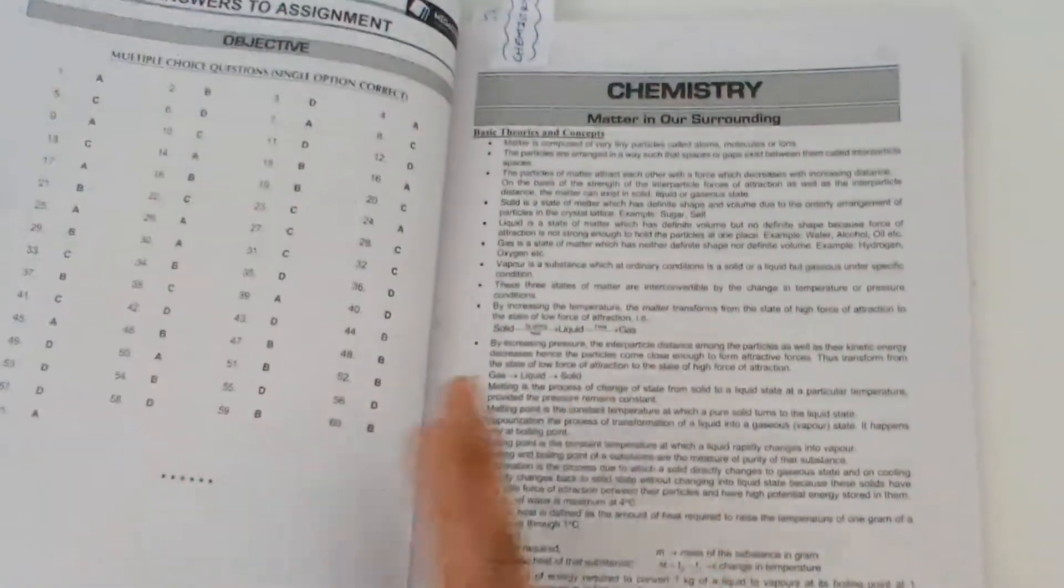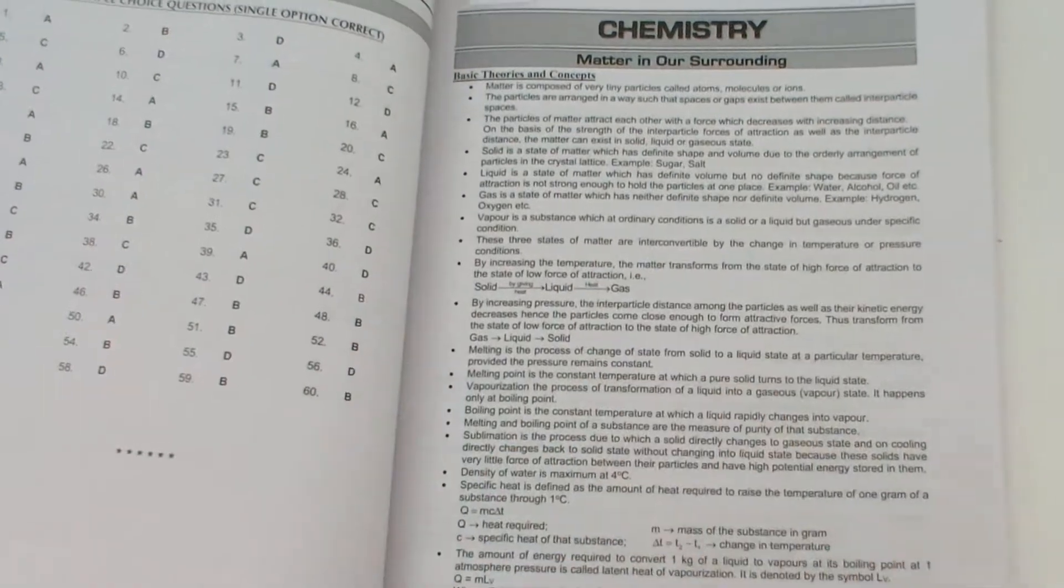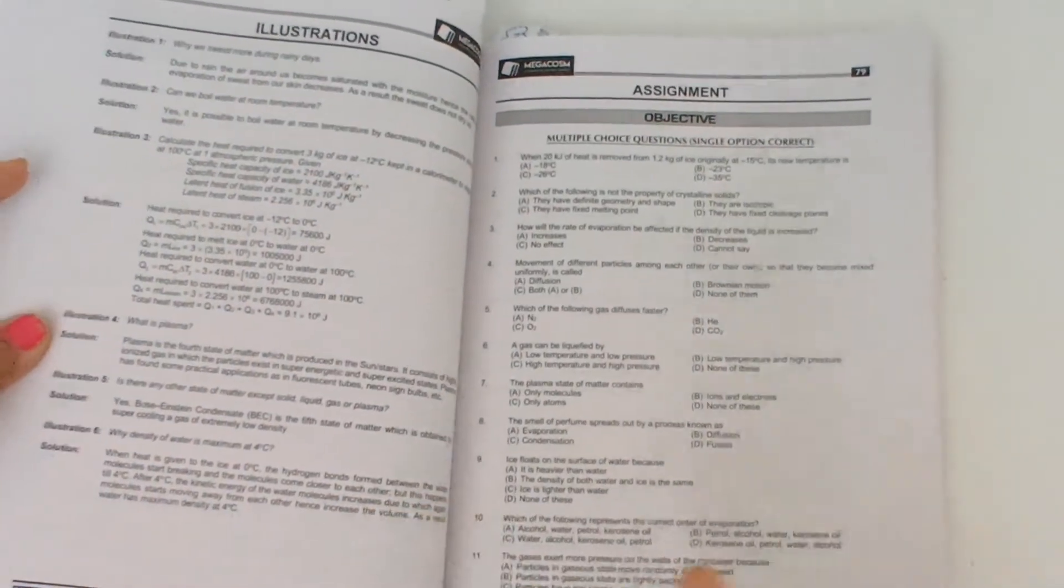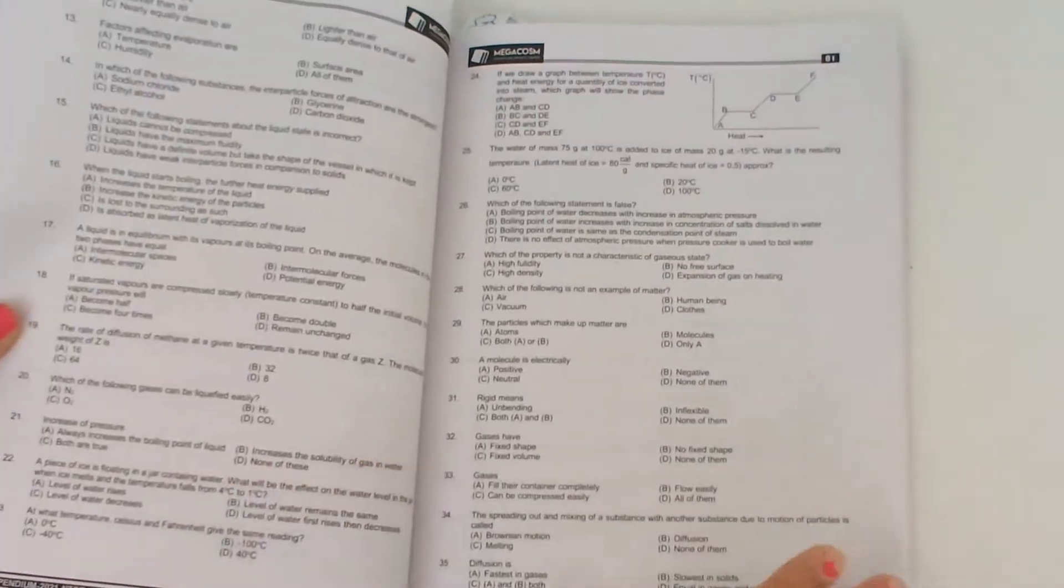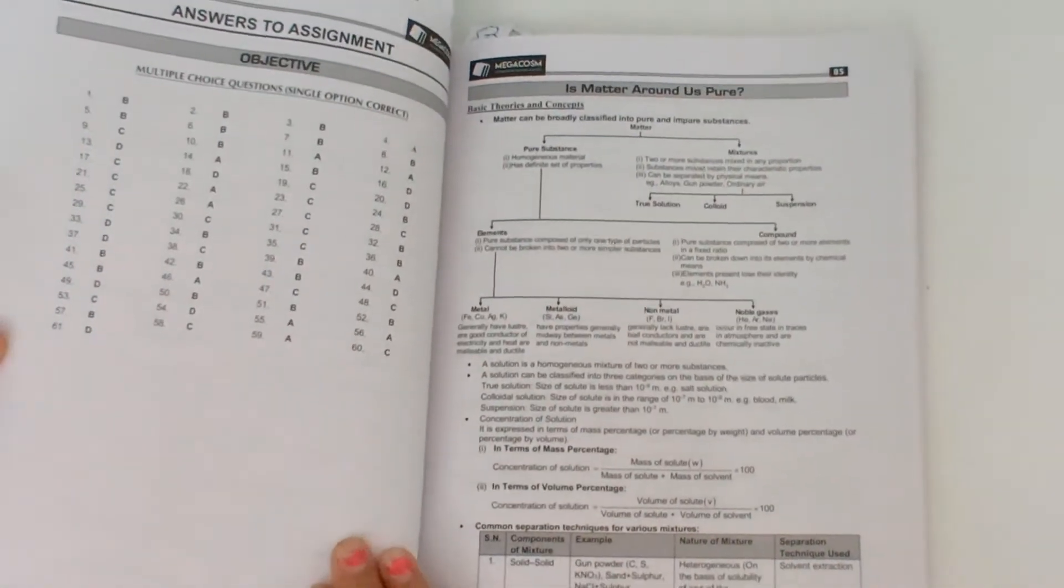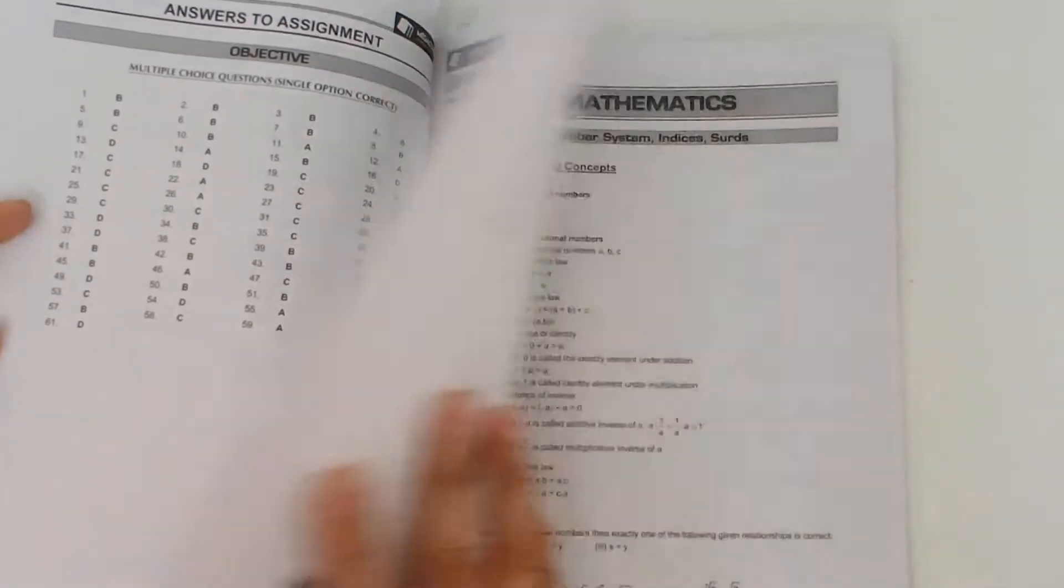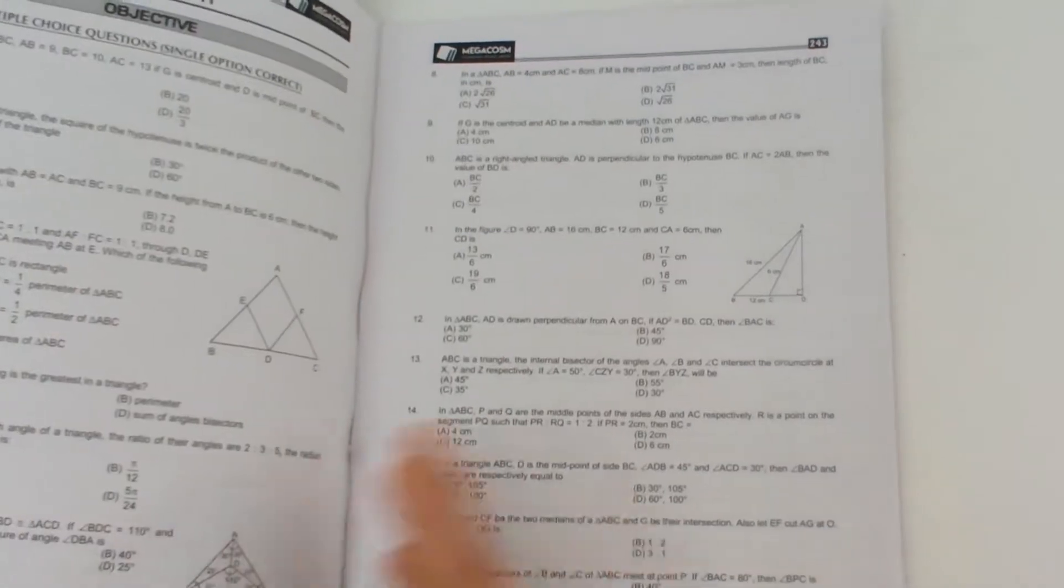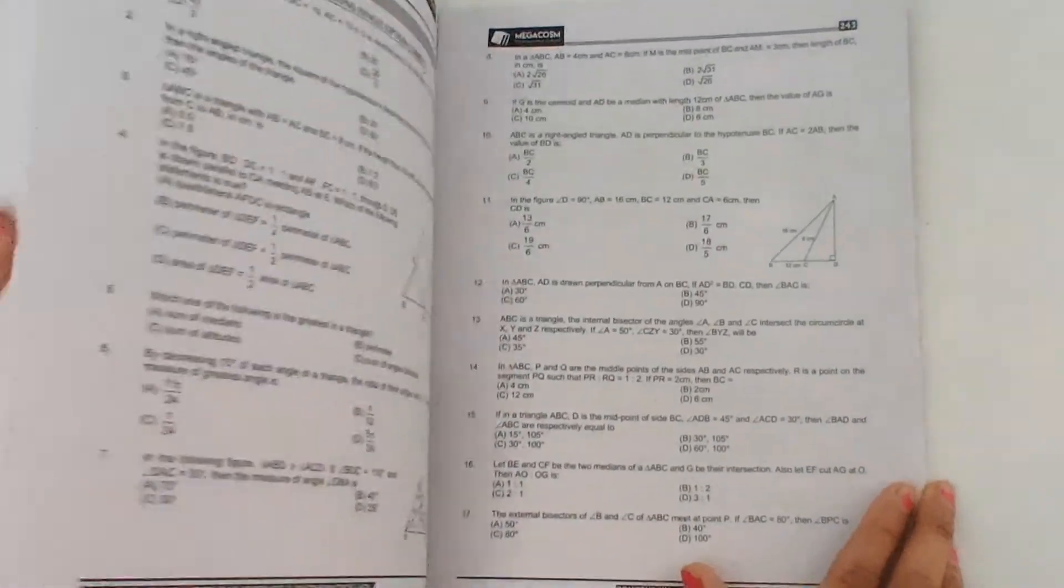Now let's see the chemistry section. In the chemistry section also there is basic theory and concepts, then some illustrations which are solved problems and then lots of MCQs. As you can see there are 61 MCQs for this chapter and for each topic like mathematics and biology section they also have lots of MCQs for your practice.